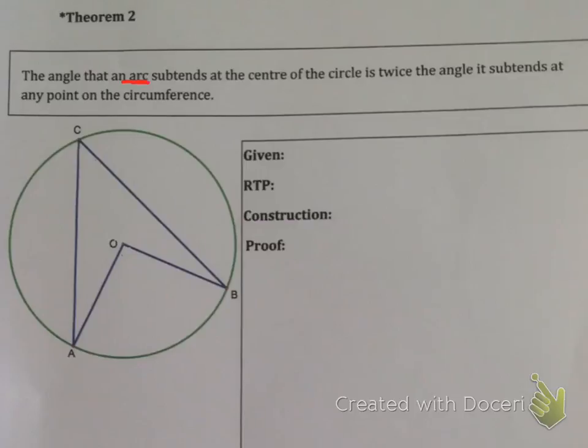So let's start. First of all, this proof says the angle that's an arc. Now what is an arc? For example in this question, an arc, you can talk about arc AB. Simply an arc is a portion of the circumference between two points. So this theorem states that the angle that an arc subtends at the center of the circle. Now what does that mean? Subtends means to make.